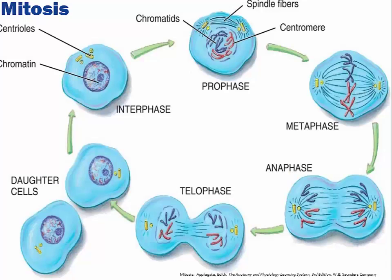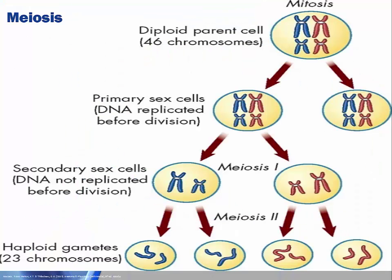Mitosis is a type of cell division that results in the formation of a genetically identical daughter cell. Before cell division, chromosomes duplicate and each new daughter cell receives a replica of the chromosomes from the original parent cell. Meiosis is meiotic cell division that takes place in two steps: meiosis I and meiosis II. Meiosis is called reduction division because the number of chromosomes is reduced by half, and it occurs only in sexual reproductive cells. Oocytes and sperm contain only a single copy of each chromosome, whereas all other body cells contain duplicates.